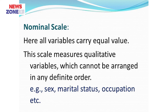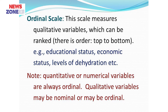Ordinal scale allows data to be arranged in ascending or descending order. Examples are educational status, economic status, and level of dehydration — these can be arranged in a top-to-bottom order. Quantitative or numerical variables are always ordinal, but qualitative variables may be nominal or ordinal.